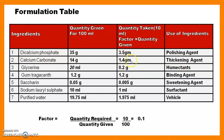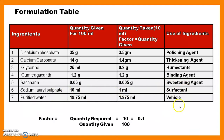Dicalcium phosphate is used as a polishing agent. Calcium carbonate is used as a thickening agent. Glycerine is used as a humectant. Gum tragacanth is used as a binding agent. Saccharin is used as a sweetening agent. Sodium lauryl sulfate is used as a surfactant. Purified water is used as a vehicle.